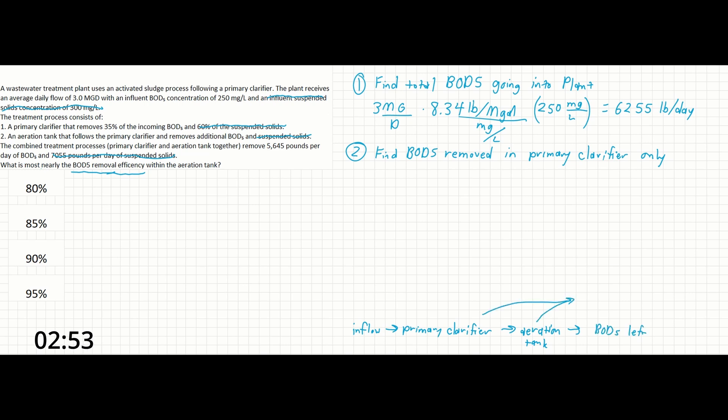As noted in the problem statement, the combined BOD5 removed from both the primary clarifier and the aeration tank is 5,645 pounds per day. The problem provides us with the removal efficiency of the primary clarifier. Since this is the first stage of the treatment process, let's multiply this value of 35% times the total BOD5 coming into the plant. We can calculate a removal at this stage of 2,189.25 pounds per day.